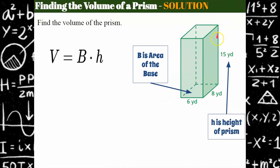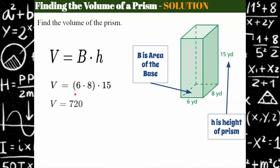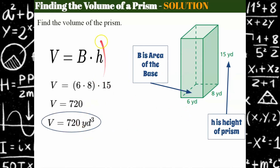Remember the height connects the bases. The height is 15 and the area of my base is 6 times 8. You multiply and you get 720 cubic yards. Remember when you're finding volume, unlike surface area, your units of measure are cubic because it's three-dimensional.